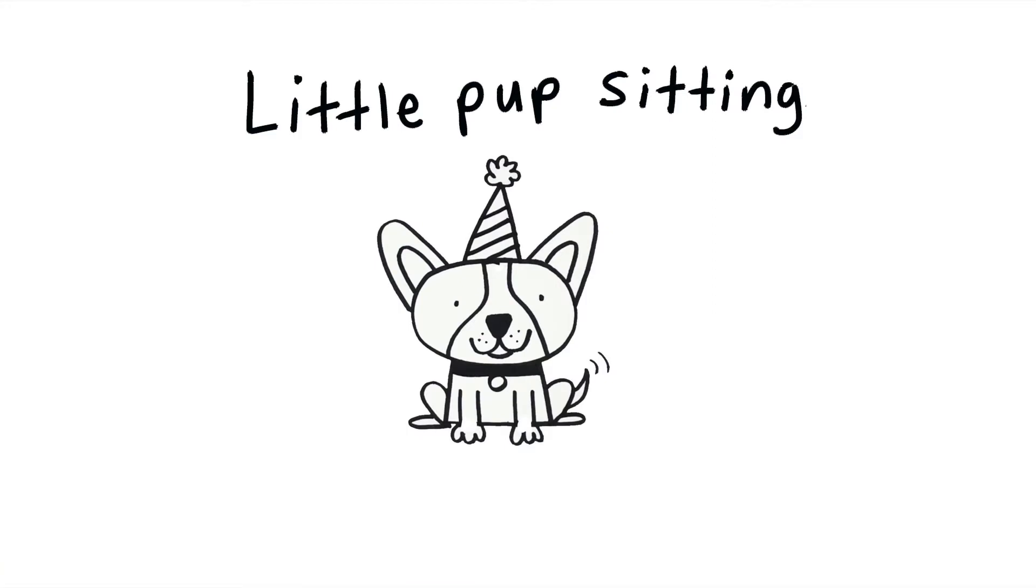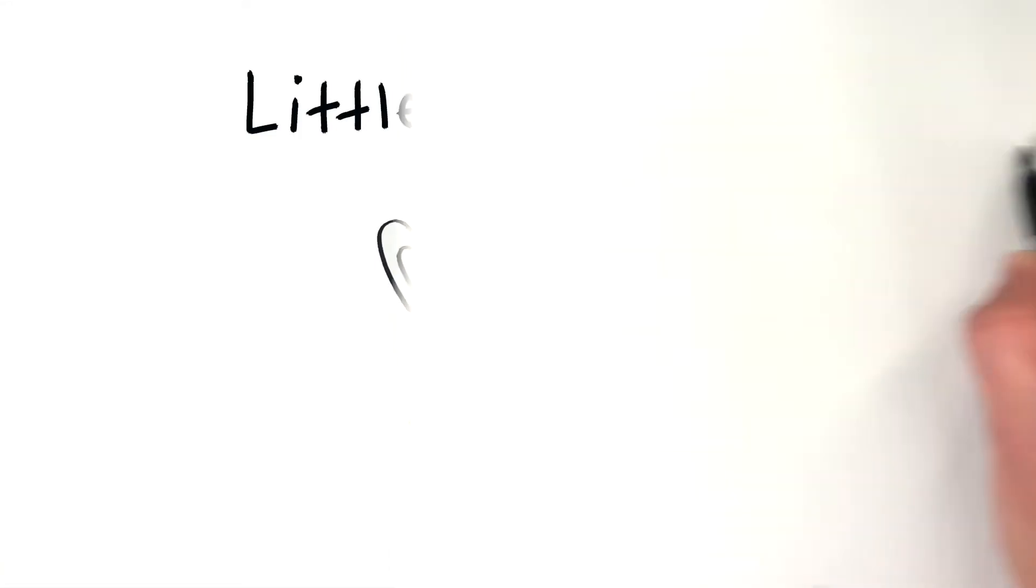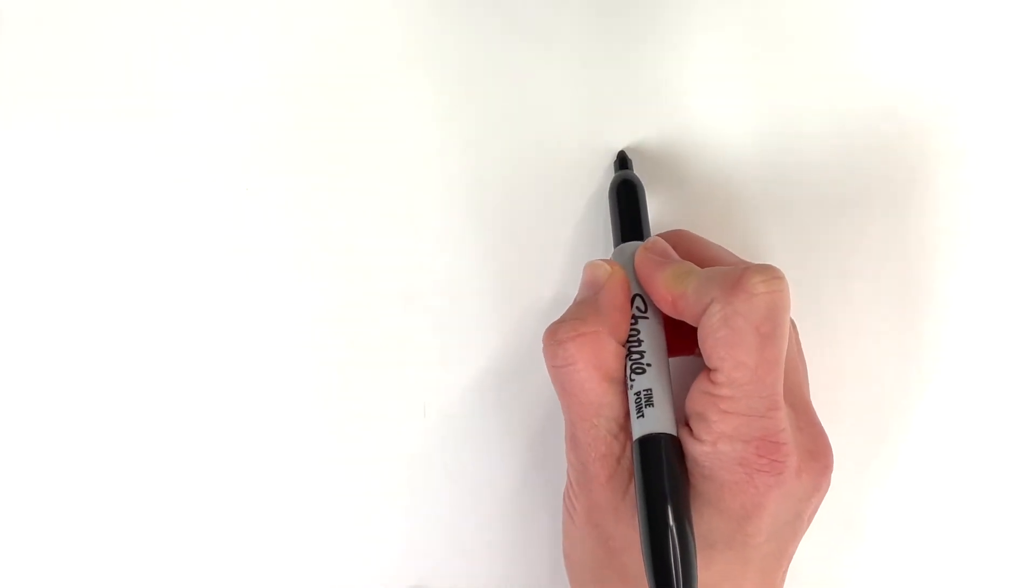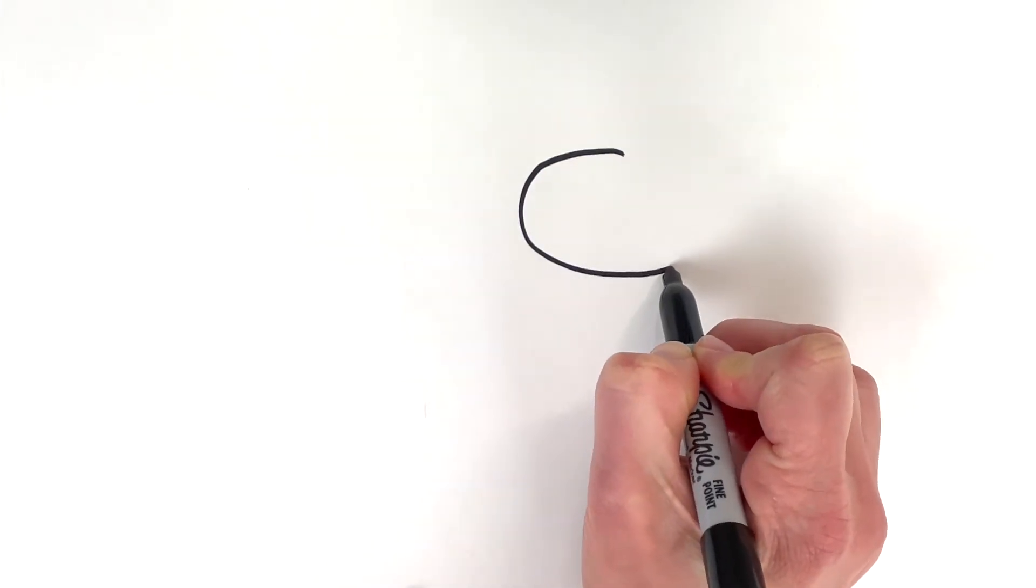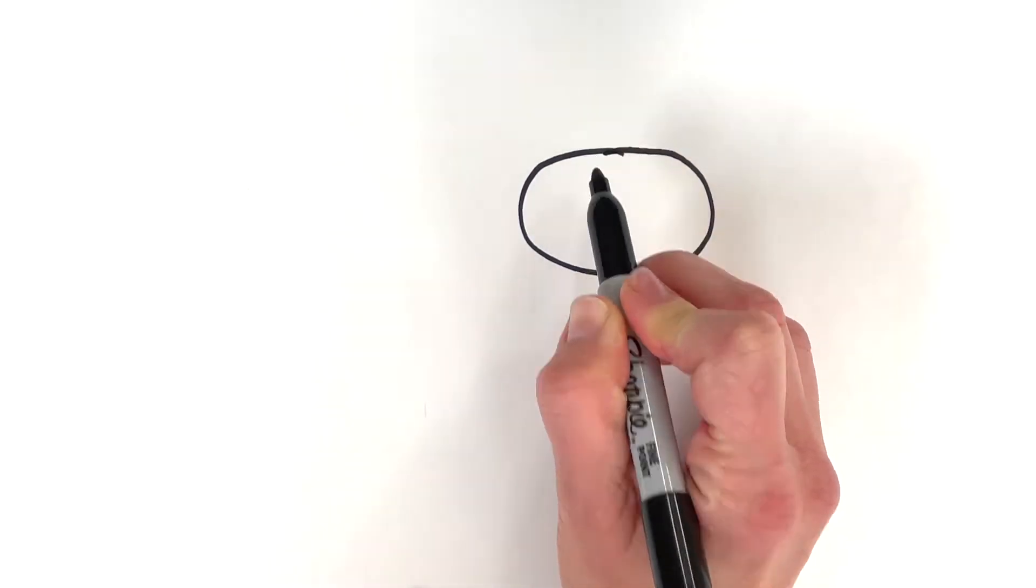First one I'm going to draw is a little pup sitting. So I'm going to start with my pup's head. Just a little oval there.